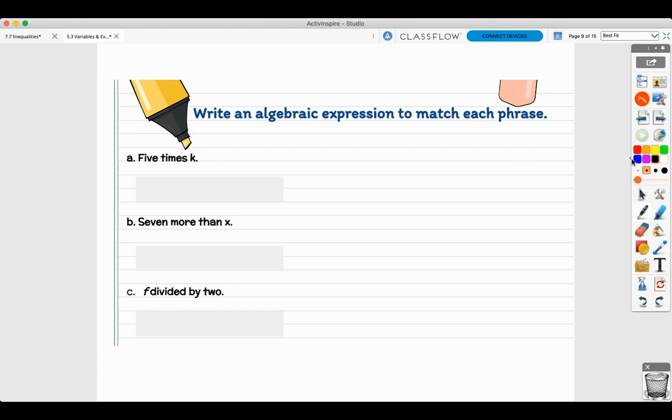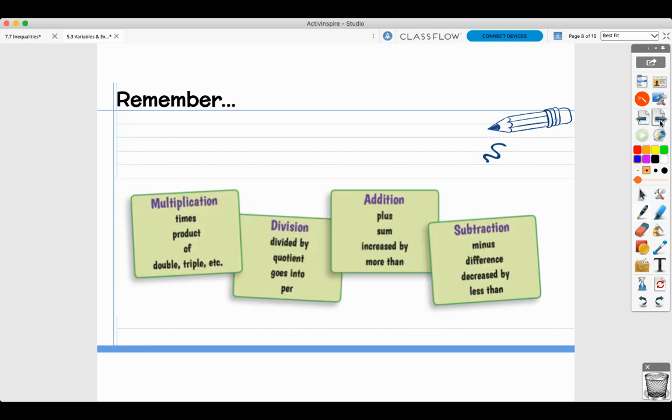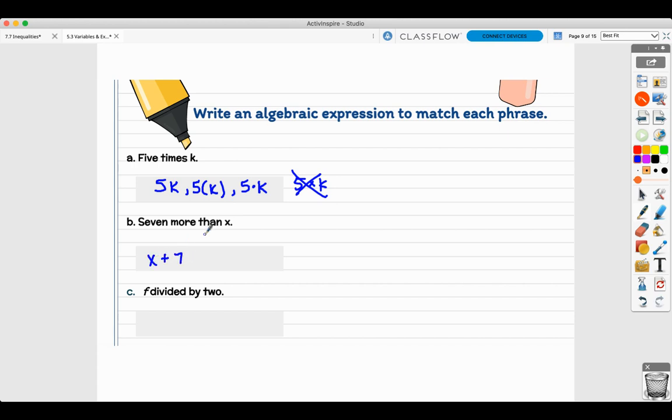Let's do some translating now. Translating time. Five times K. All you're writing is an algebraic expression that matches the phrase. You could write it as 5K, or you could write it as 5 dot K. What you can't do anymore is put that multiplication sign in between. This is a big no-no now. Seven more than X. If you're not sure, you can go back to your chart, and more than is addition. So seven more than X is X plus seven. And this was one of them that I said you switch them, but it is acceptable and okay if you write seven plus X. F divided by two. F divided by two like that, or you can just use the slash, the fraction bar. F divided by two. Both of those work too.